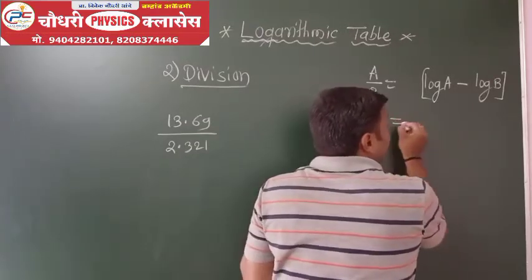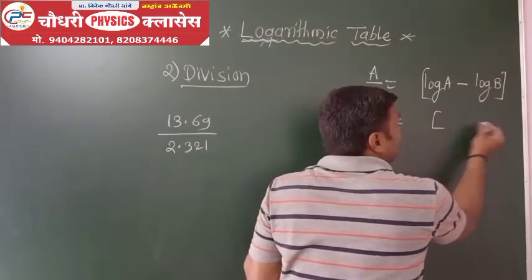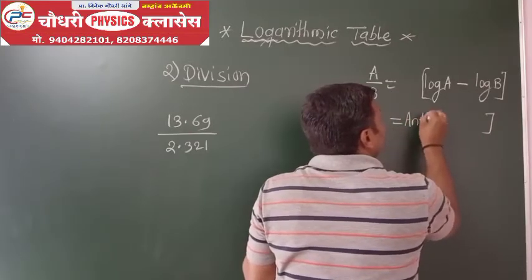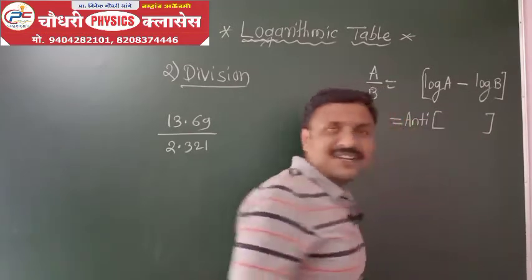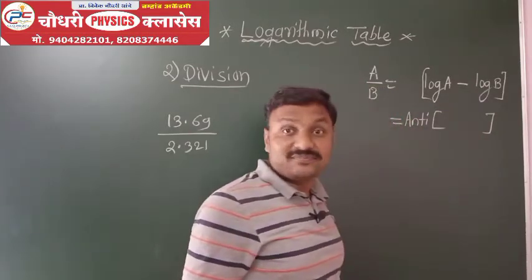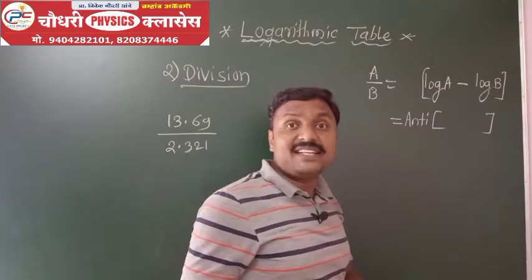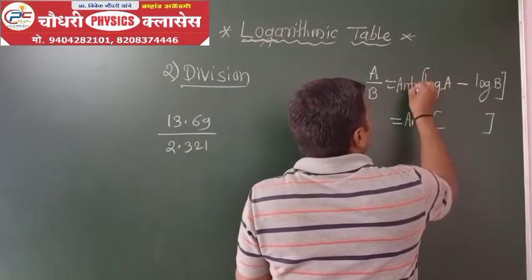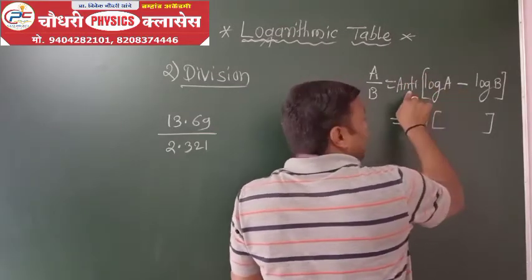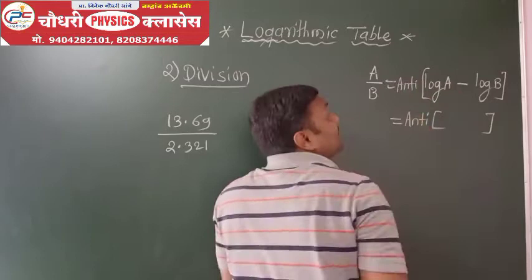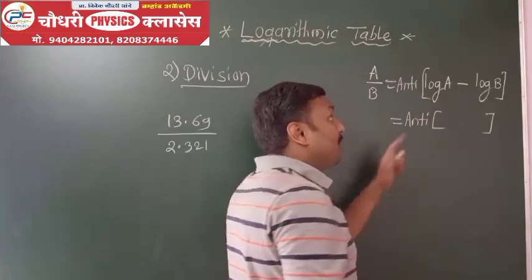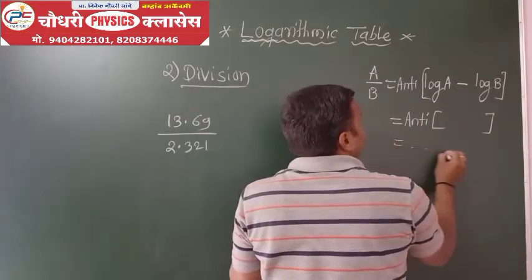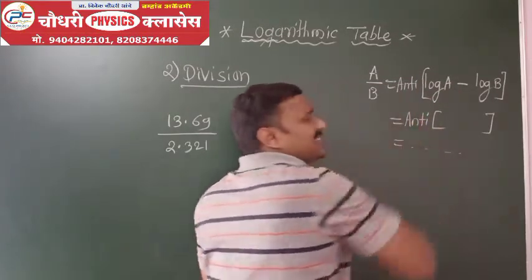After the subtraction of the logs, you take the antilog of the result. That antilog gives you your answer. That is the concept — the antilog of the subtraction is your division answer.